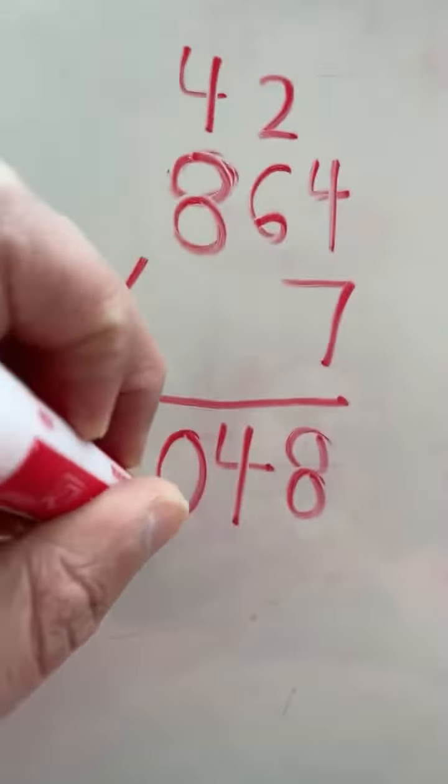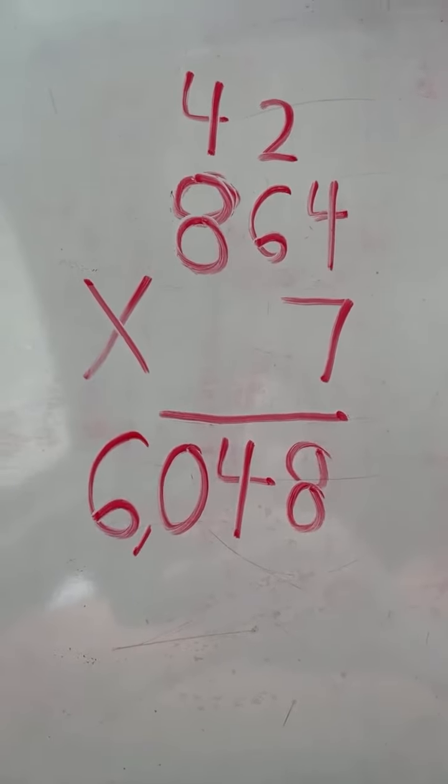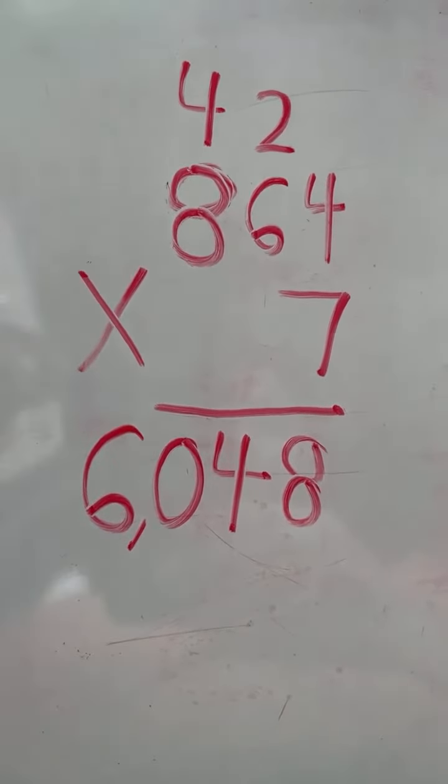And we have our final answer. Eight hundred sixty-four times seven equals six thousand forty-eight.